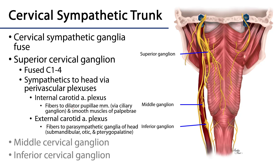The cervical sympathetic trunk is very unique because its ganglia condense — we don't have a ganglion at each spinal level, but three: a superior, a middle, and an inferior. The superior cervical ganglion is quite large, representing the fused ganglia of spinal nerves C1 through C4, and is the exclusive supplier of sympathetic fibers to the head. This is through one of two major paravascular plexuses: either the internal carotid plexus, which ascends through the carotid canal, or the external carotid plexus, which sends branches to serve the neck and face.